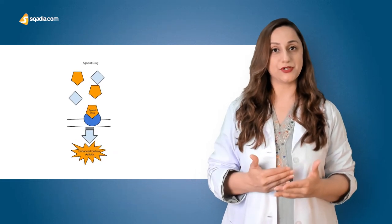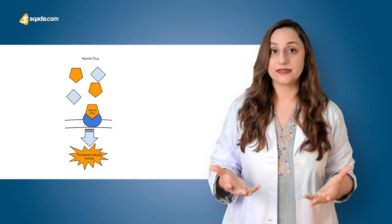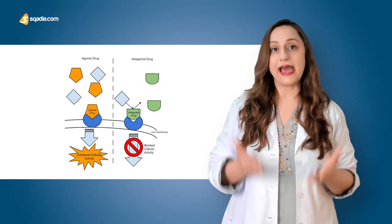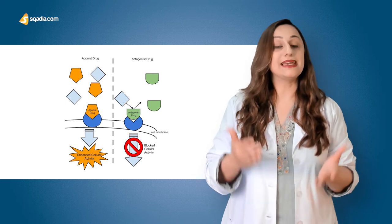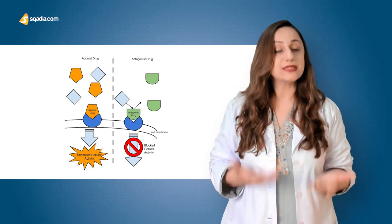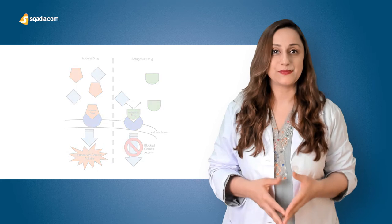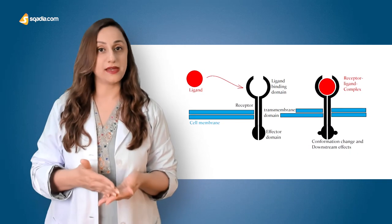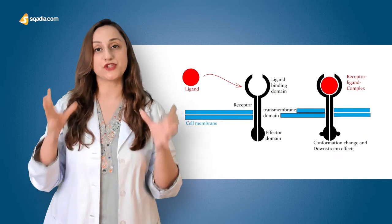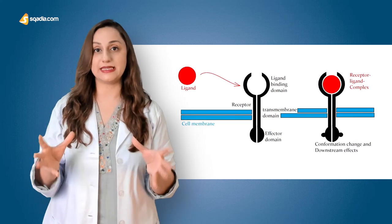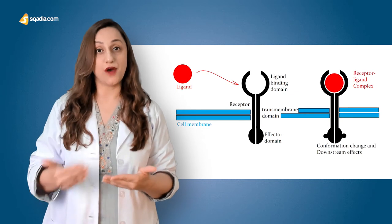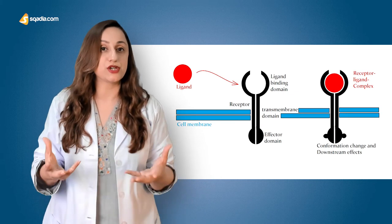A ligand that binds and activates a receptor is an agonist. However, an antagonist prevents the agonist from binding but does not itself produce a cellular response. The relationship between a ligand and its binding partner is a function of charge, hydrophobicity — referring to the water-repelling nature of the molecules — and molecular structure.